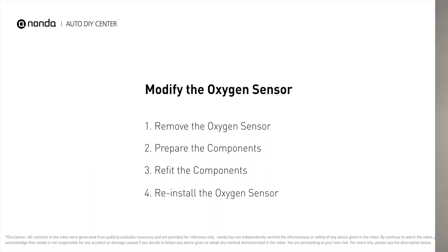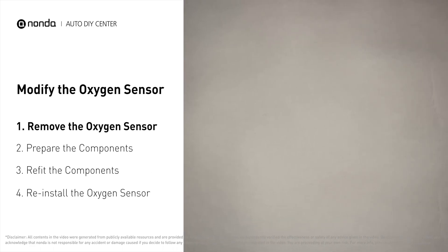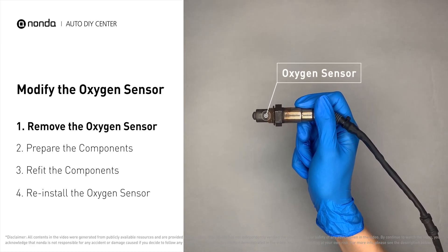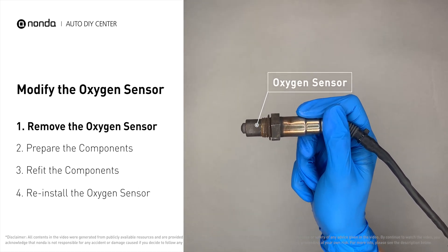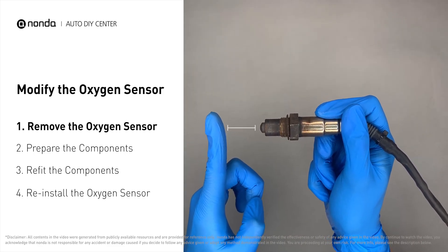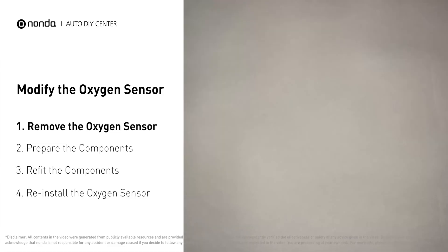You can remove the oxygen sensor from the converter and fix P0420 by putting some extra space between the sensor and the converter.